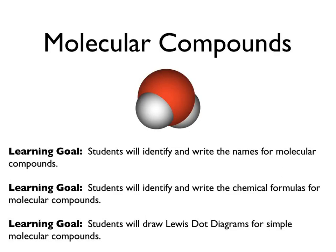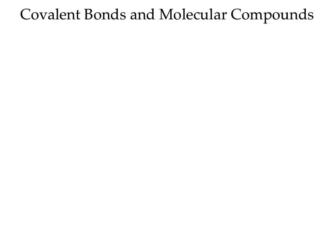Molecular compounds, non-ionic compounds — that was chapter 8, this is chapter 9. Molecular compounds are usually non-metals, all non-metals.